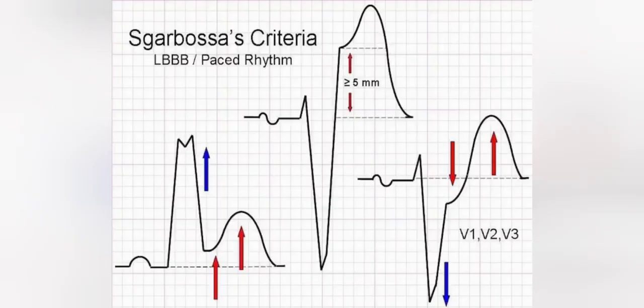To clarify the terminology: concordant means the ST change is in the same direction as the QRS complex, while discordant means it is in the opposite direction. For concordant ST elevation to be significant, it must be more than one millimeter — this applies in leads I and AVL. The other features — concordant ST depression and excessively discordant ST elevation — are assessed in leads V1, V2, and V3.